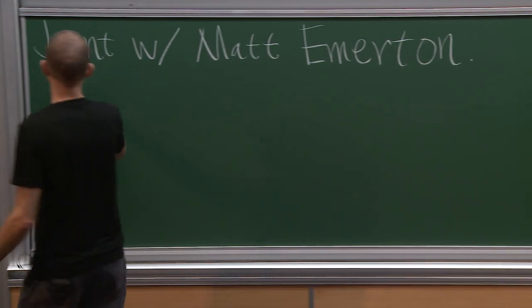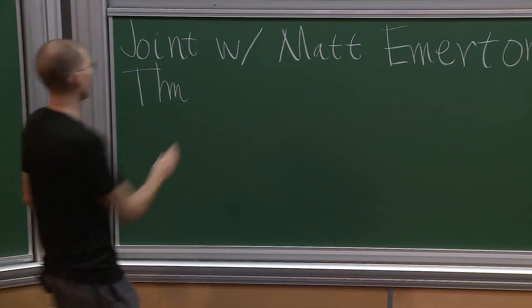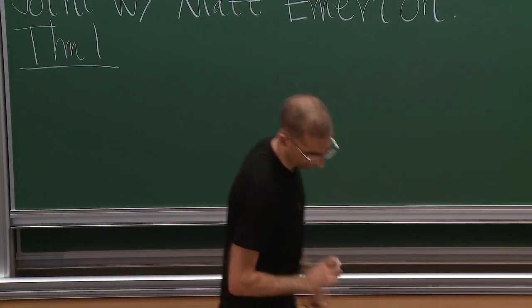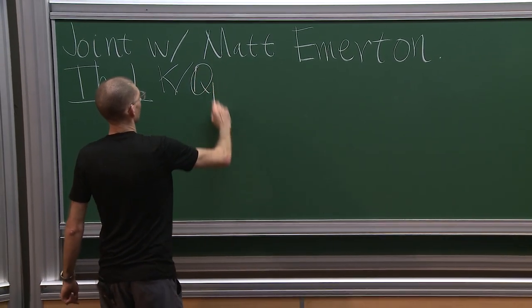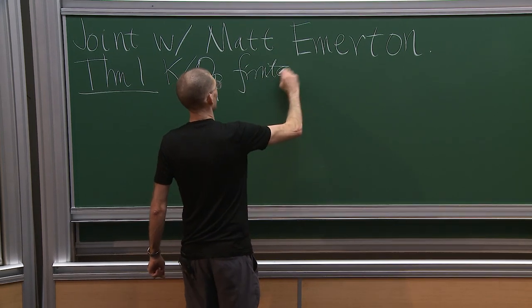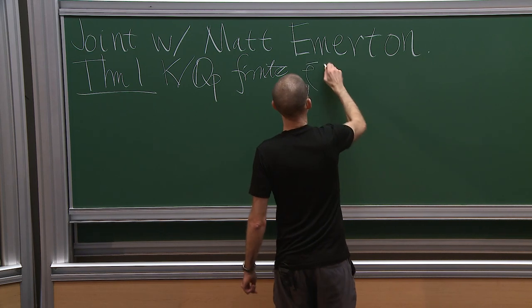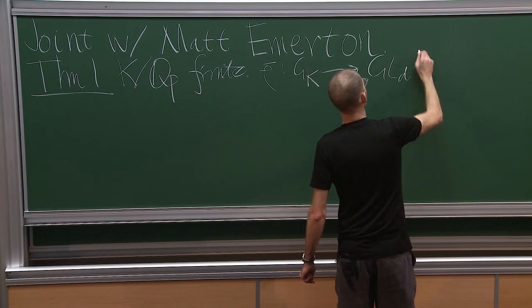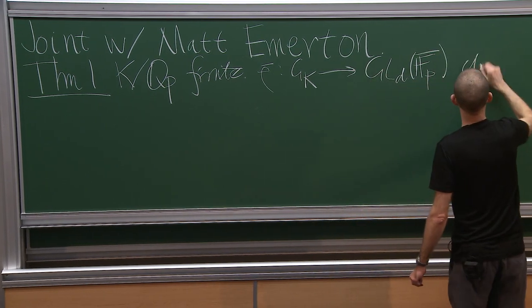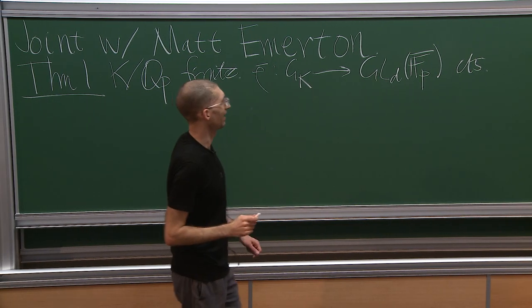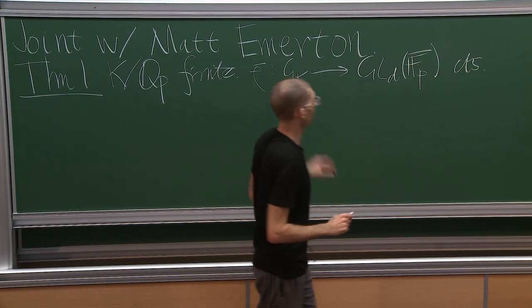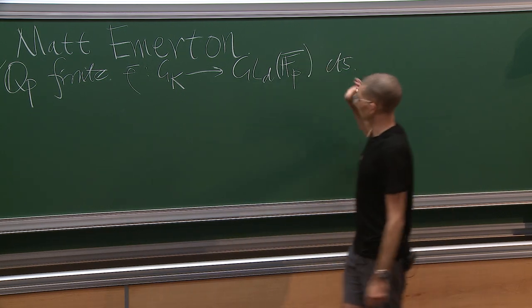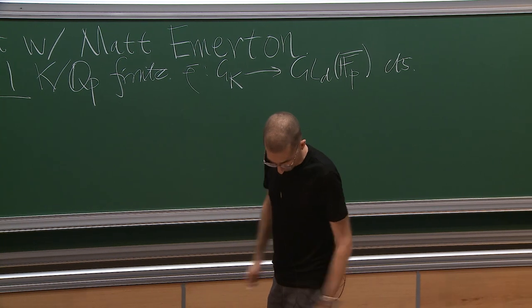So, some mathematics. Let me start by stating the theorems. Theorem one is basically a local theorem. K over Q_p is going to be a finite extension, and rho-bar is going to be a d-dimensional mod p representation. My representations mod p or p-adic will be continuous with respect to the discrete topology and the profinite topology. Wherever possible I'll write F_p-bar for coefficients.